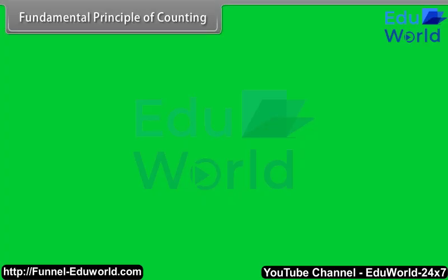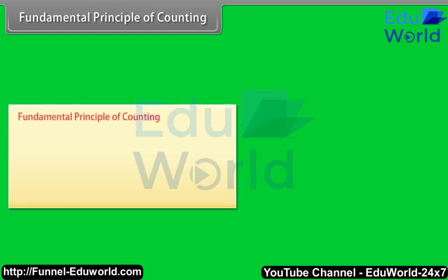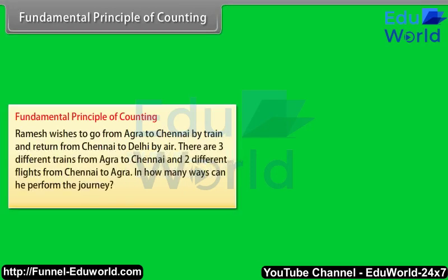Fundamental principle of counting. Let's understand it with an example. Ramesh wishes to go from Agra to Chennai by train, and return from Chennai to Delhi by air. There are three different trains from Agra to Chennai and two different flights from Chennai to Agra. In how many ways can he perform the journey?